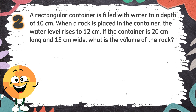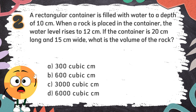Number 2: A rectangular container is filled with water to a depth of 10 centimeters. When a rock is placed in the container, the water level rises to 12 centimeters. If the container is 20 centimeters long and 15 centimeters wide, what is the volume of the rock? The choices are: A. 300 cubic centimeters, B. 600 cubic centimeters, C. 3,000 cubic centimeters, D. 6,000 cubic centimeters.